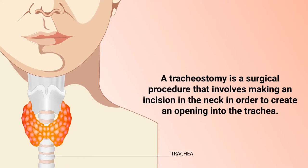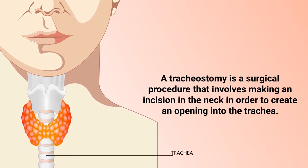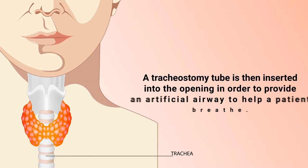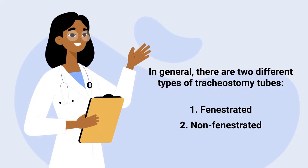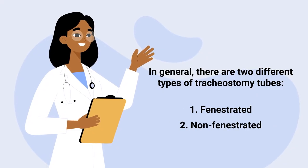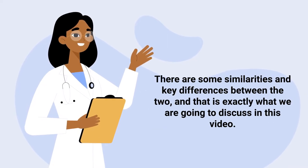A tracheostomy is a surgical procedure that involves making an incision in the neck in order to create an opening into the trachea. A tracheostomy tube is then inserted into the opening in order to provide an artificial airway to help a patient breathe. In general, there are two different types of tracheostomy tubes: fenestrated and non-fenestrated.